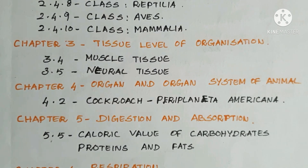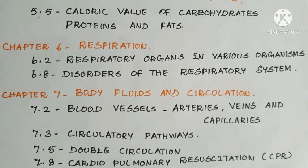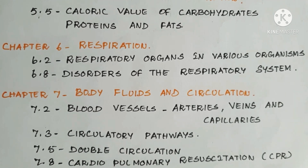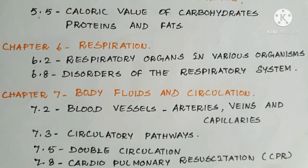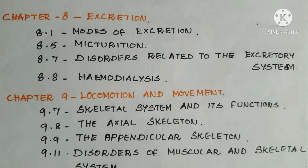Chapter 6: Respiration — 6.2 Respiratory Organs in Various Organisms, 6.8 Disorders of the Respiratory System. Chapter 7: Body Fluids and Circulation — 7.2 Blood Vessels: Arteries, Veins and Capillaries, 7.3 Circulatory Pathways, 7.5 Double Circulation, 7.8 Cardiopulmonary Resuscitation.